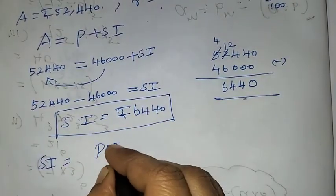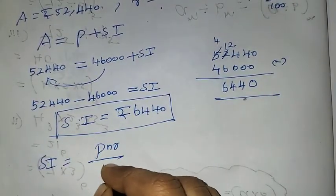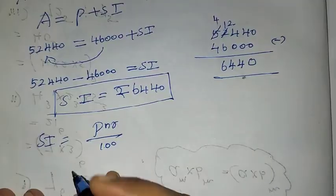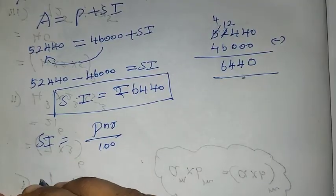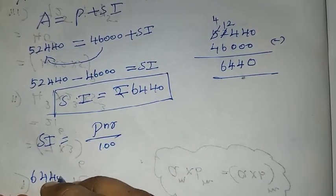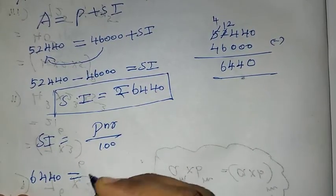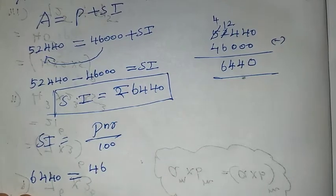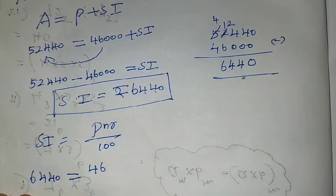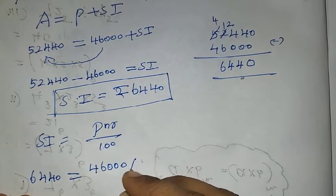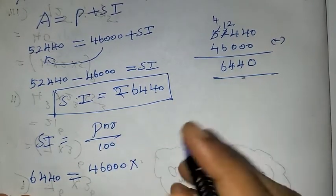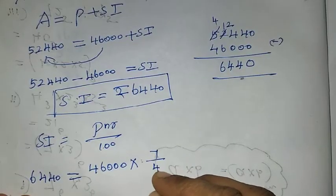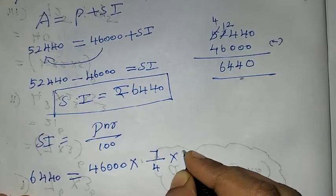Now, Simple Interest equals PNR divided by 100. Substituting the values: 6,440 equals 46,000 into 7 by 4 into R, divided by 100.